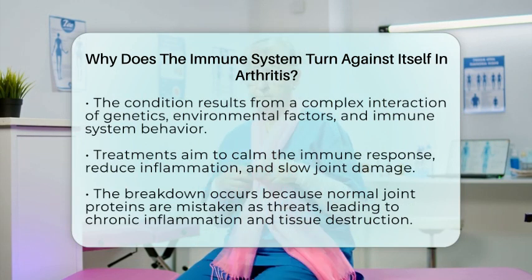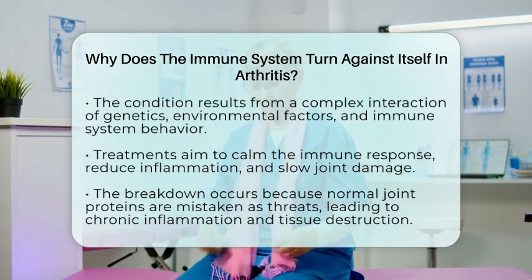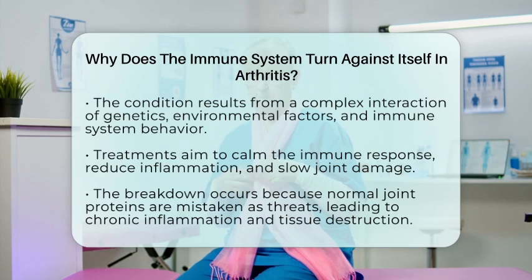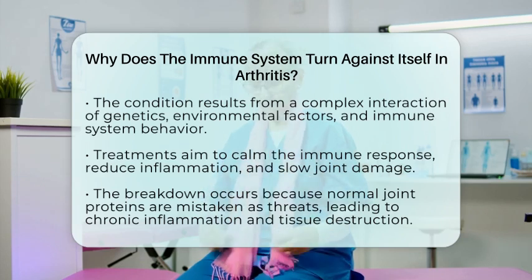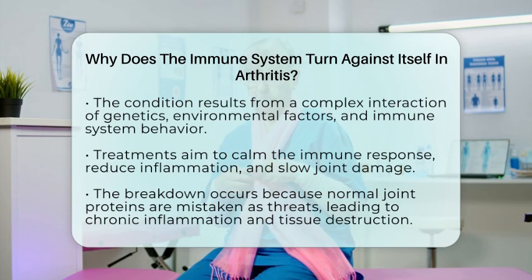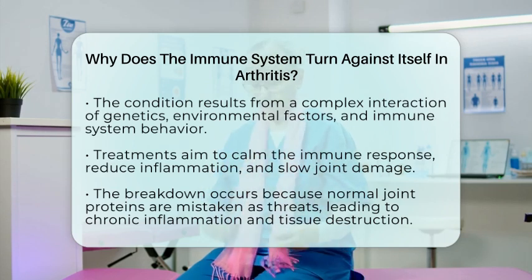Understanding this helps researchers develop treatments that aim to calm down the immune response and prevent joint destruction. Current therapies target different parts of the immune system to reduce inflammation and slow disease progression.